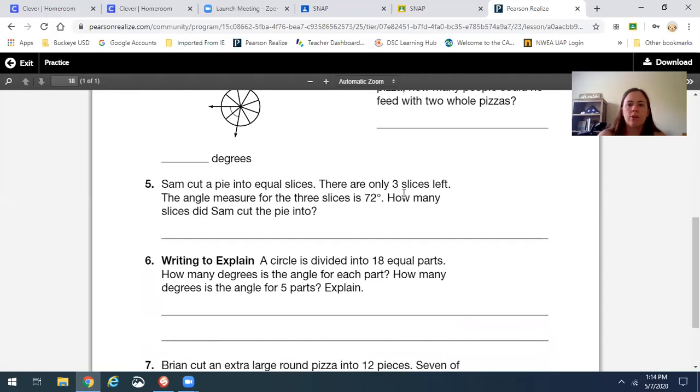Now this one, he cut a pie. There are only three slices left. The angle measure for three slices is 72. How many slices did Sam cut the pie into? So I would probably do 72 divided by 3, and that's going to give me what each individual slice is. And then add those pieces together. Oh sorry, and then I would figure out how much each of the slices are, and then subtract that from 360. Let me do that actually, because it's not making sense to me while I'm talking about it.